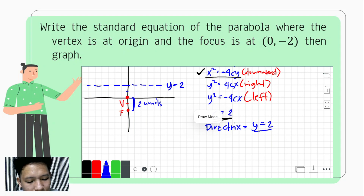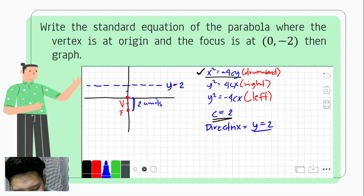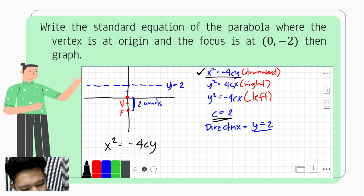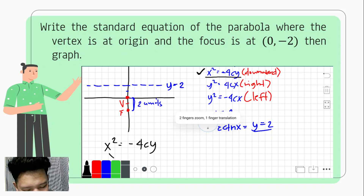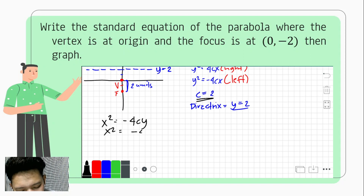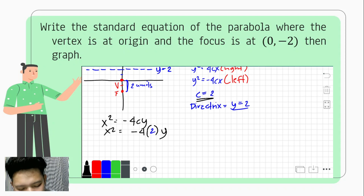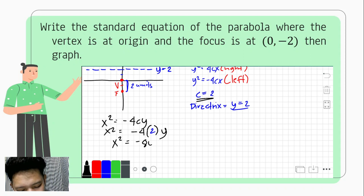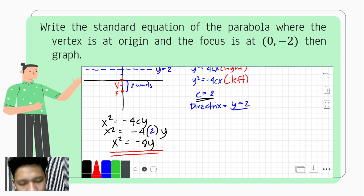So now we are ready to have the standard equation of the parabola. As mentioned, we'll be using x squared equals negative 4cy. By substituting all the necessary values, that would be x squared equals negative 4 times 2 times y. And by simplifying, we'll have x squared equals negative 8y. So this would be our standard equation of the parabola.